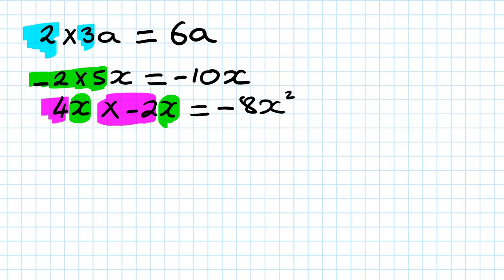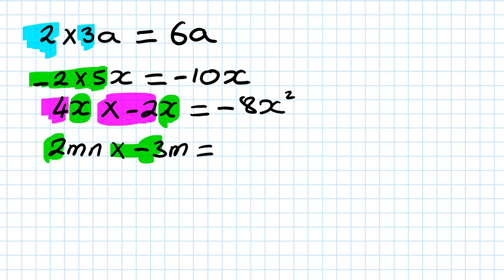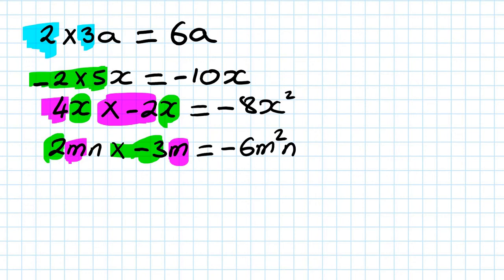Next one: 2mn² times minus 3m. First, 2 times negative 3 - a positive times a negative gives a negative, 2 times 3 is 6, so negative 6. Then m times m is m squared, and n² you can't simplify further so just write it out. The answer is minus 6m²n².